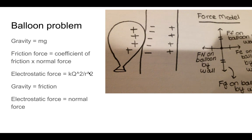r would be the distance between the balloon and the wall. In this case, gravity, the force going down, equals the force of friction going up, and electrostatic force going in equals the normal force going out.